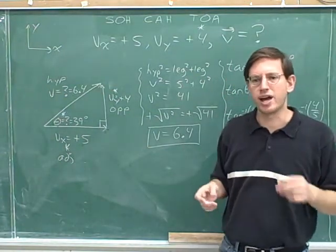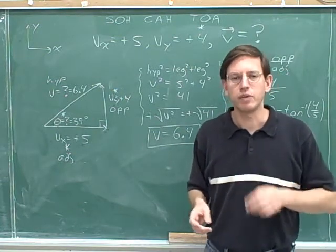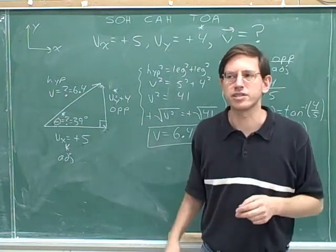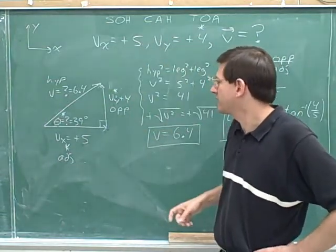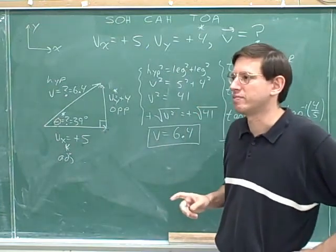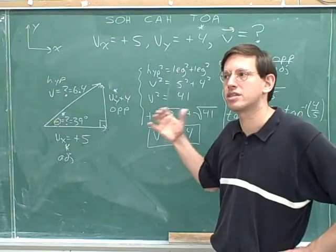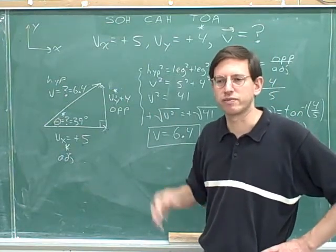Remember that we've learned two types of trigonometry. We've learned what to do when you're given one side and one angle. And we've learned what to do when you're given two sides. Well, this was a problem where we were given two sides, right? We were given these two sides and then we figured out everything else. So you can see that when you're given the components and asked for the overall vector, that's a trigonometric problem where you're given two sides.